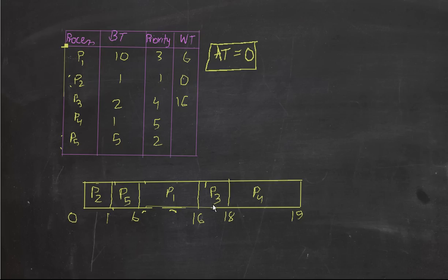p4, the waiting time is eighteen, and the arrival time is zero, so eighteen is the waiting time. And p5, the starting time is one, and the arrival time is zero, so one minus zero is one.